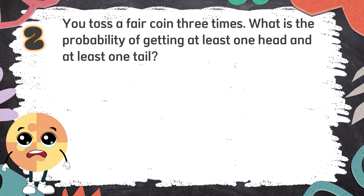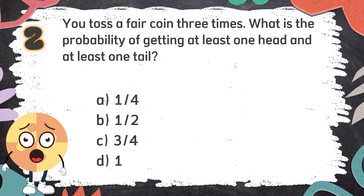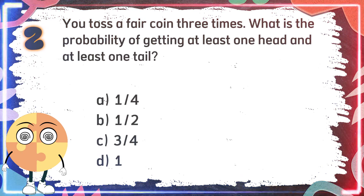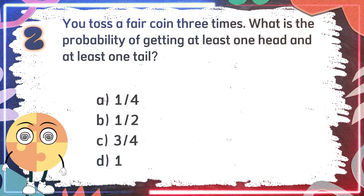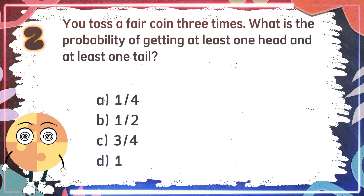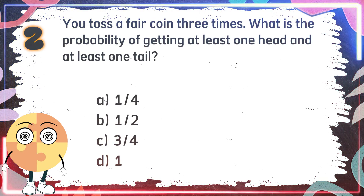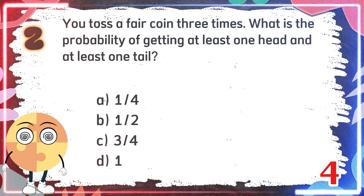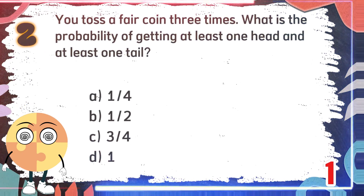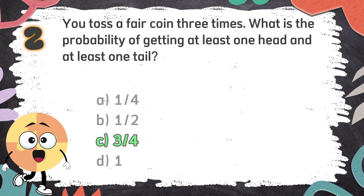Number 2. You toss a fair coin three times. What is the probability of getting at least one head and at least one tail? The choices are A. 1 out of 4, B. 1 out of 2, C. 3 out of 4, D. 1. The correct answer is C. 3 out of 4.